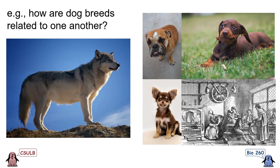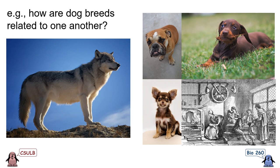Let's look at an example from the part of biology that uses bootstrapping the most: phylogenetics. We can explore this by asking how dog breeds are related to one another. Most people know that modern dog breeds are related to wolves. However, many incorrectly think that dogs evolved from modern wolves. The truth is that dogs evolved from organisms that 10,000 years ago were the ancestor of both modern dogs and modern wolves — a subtle but important distinction.